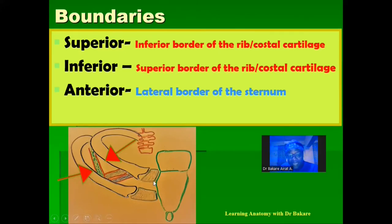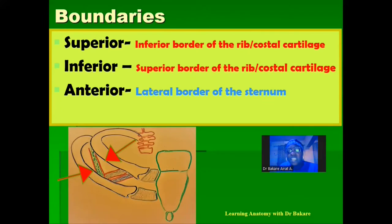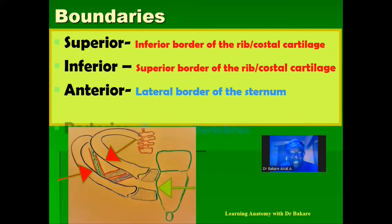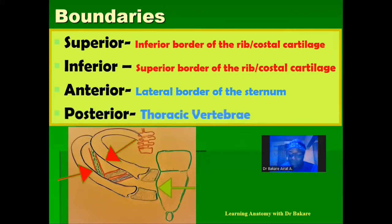Anteriorly, the intercostal space is bounded by the lateral border of the sternum, highlighted in green in the anterior part of the thoracic cage. Posteriorly, it is bounded by the thoracic vertebra, seen at the posterior median plane of the thoracic cage.